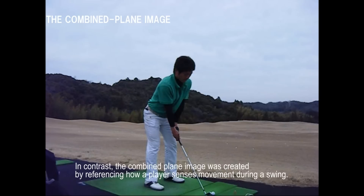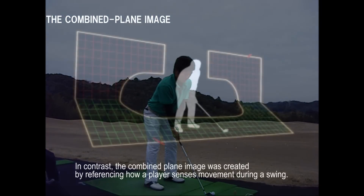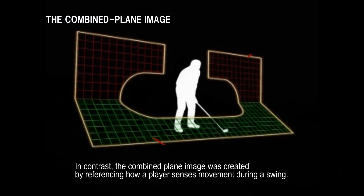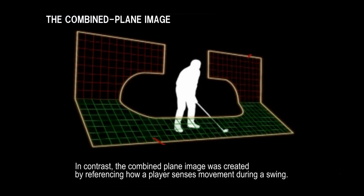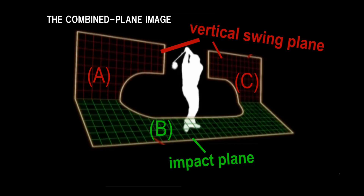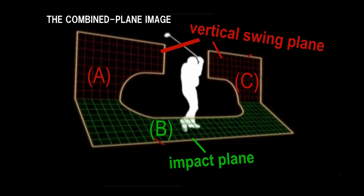In contrast, the combined plane image was created by referencing how a player senses movement during a swing. The combined plane image is comprised of two sheets: a vertical swing plane and a single diagonal swing plane of the impact area.